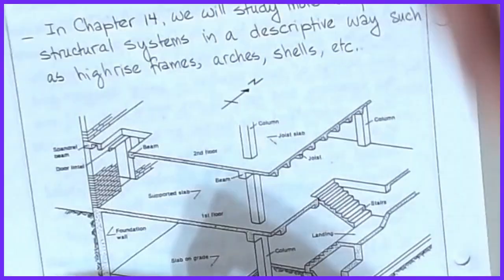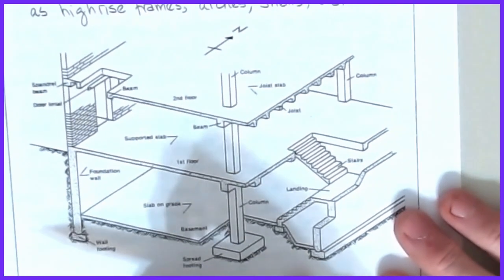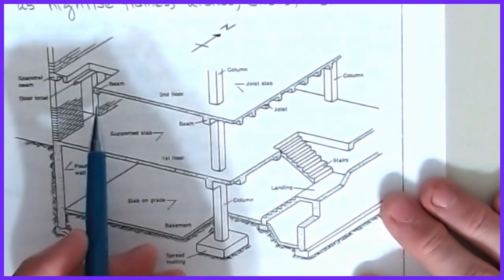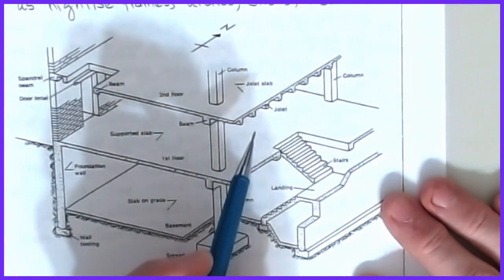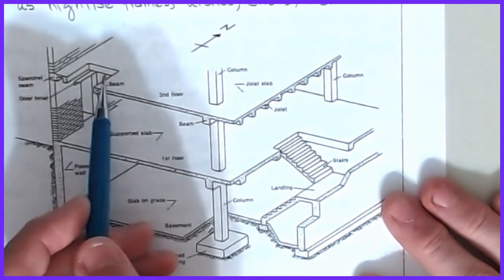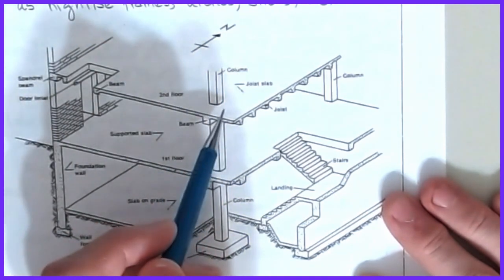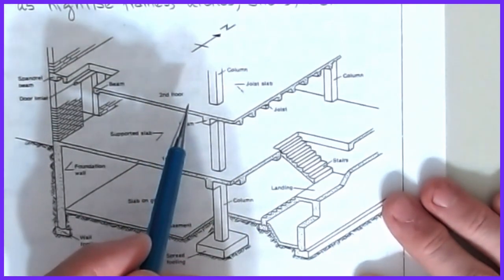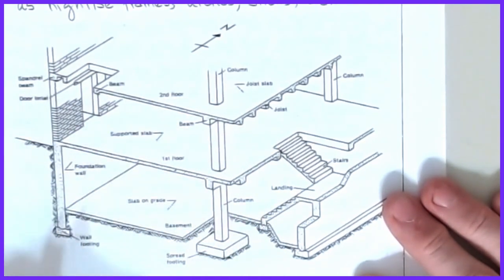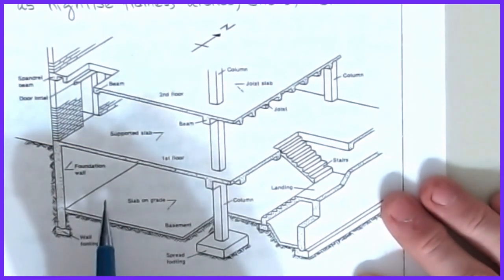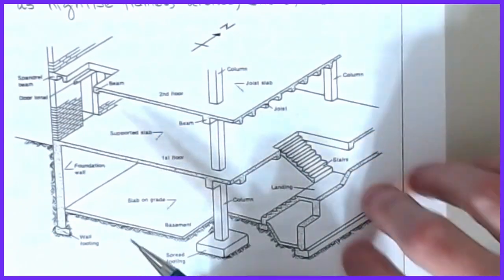Chapter 14 starts to discuss more complicated structural systems. At this undergraduate level we don't do a lot with this, but we start talking about the interaction between slabs and columns, slabs and beams, and beams and columns. This is most evident in topics involving two-way design of slabs because of a phenomenon known as punching shear. We may not do a whole lot in this series, but eventually I hope to have lessons that cover that material, as well as stairways, foundation designs, spread footings, wall footings, and wall design.